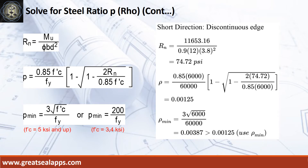Given short direction, discontinuous edge moment equals 11,653.16 inch-pounds. Resistance factor equals 0.9, b equals 12 inches, and d equals 3.8 inches. The beam design ratio RN equals 74.72 PSI and reinforcement ratio rho equals 0.00125. Use rho minimum of 0.00387.